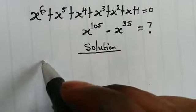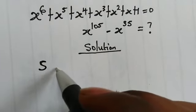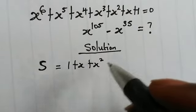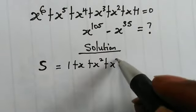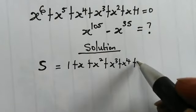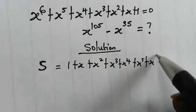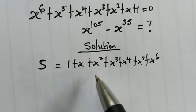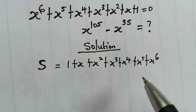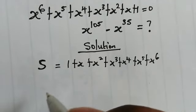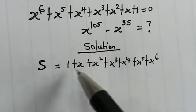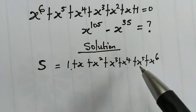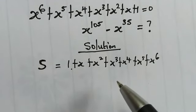So here we have: 1 plus x plus x squared plus x cubed plus x to the power of 4 plus x to the power of 5 plus x to the power of 6. We're going to sum this up to the first n terms. Here we have 1, 2, 3, 4, 5, 6, 7 — so 7 terms. We're going to sum this up to the first 7 terms.